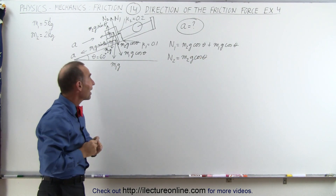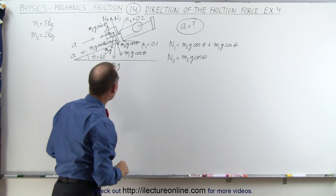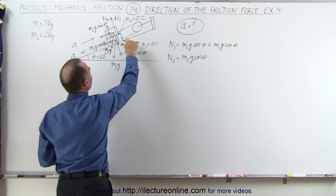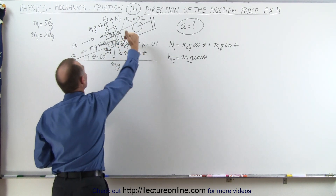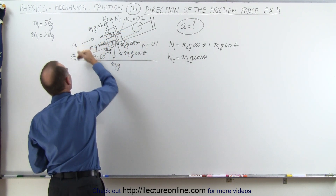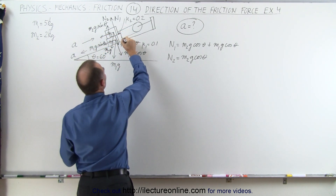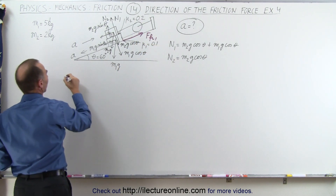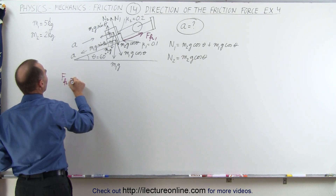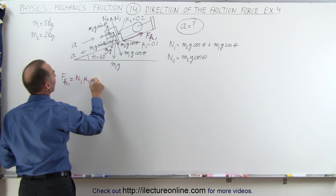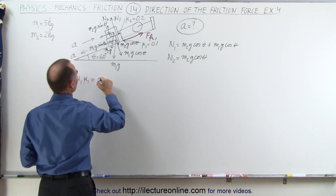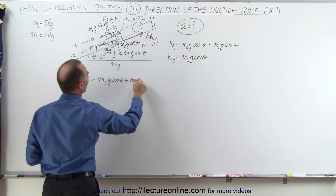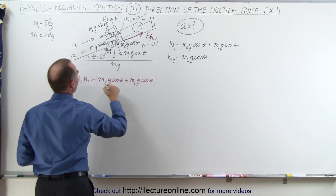Now we need to find the friction forces. First, the friction force between this block and the surface — if we assume that without any friction this block will slide in this direction, that means the friction force must be pushing in the opposite direction. Let's call it force friction one. Force friction one is equal to normal force one times mu sub one, and normal force one is m2g cosine of theta plus m1g cosine of theta, all multiplied times mu sub one.